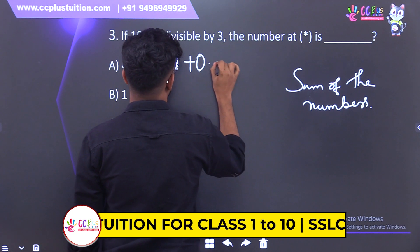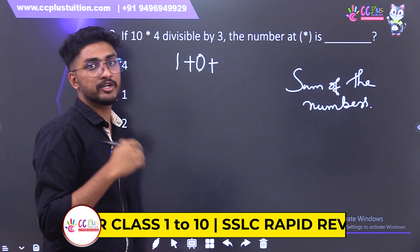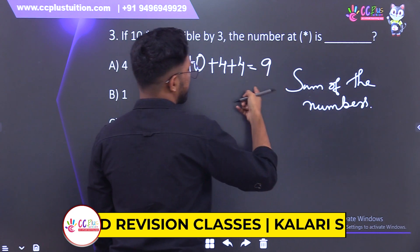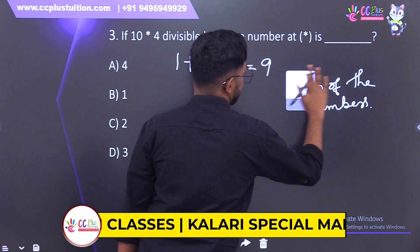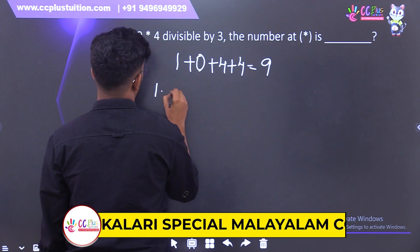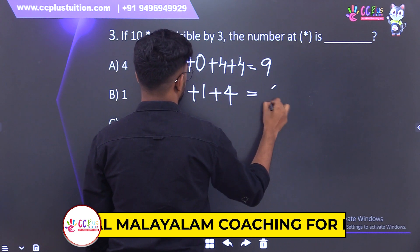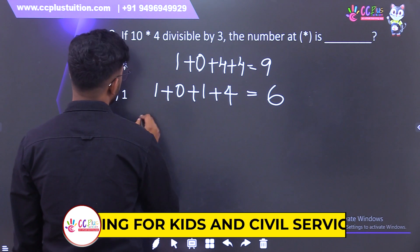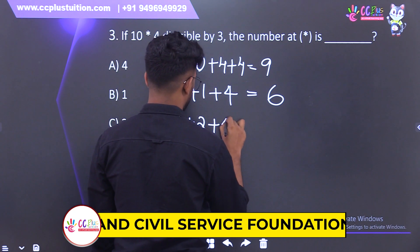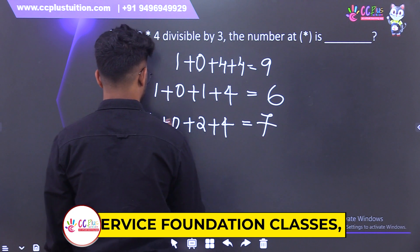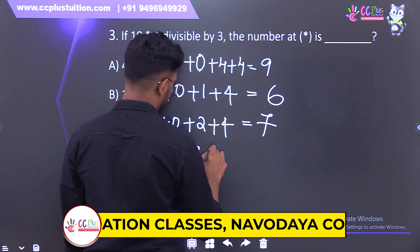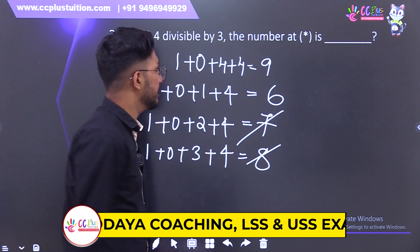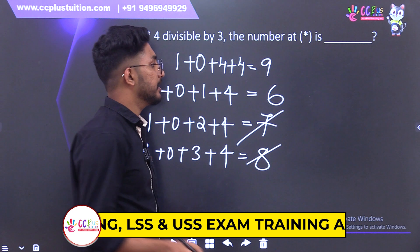We have the digits 1, 0, 4, 1 — one star number is there, then we have 4. Divisibility by 3: sum of the digits. We have 4, 8, 9. 9 is divisible. 1 plus 0 plus 1 plus 4 equals 6. 4 plus 1 is 5, 5 plus 1 is 6. Testing: 1 plus 0 plus 2 plus 4 is 7. 1 plus 0 plus 3 plus 4 is 8.